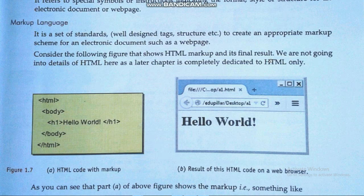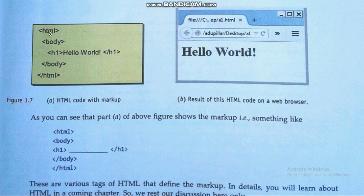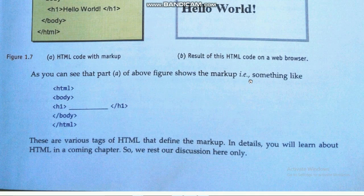Consider the following HTML example: it starts with the html tag, then a body tag, then a heading one tag with 'Hello World', then the closing heading one tag, then closing body, and closing html. The result of this HTML is the rendered page. The html, body, and h1 tags are various tags that define the markup. We will learn about HTML coding in detail in the coming chapter.